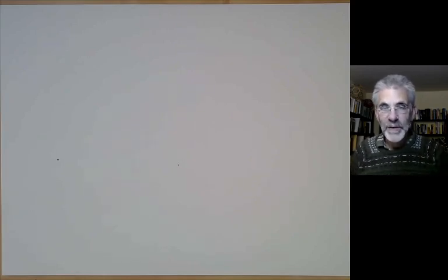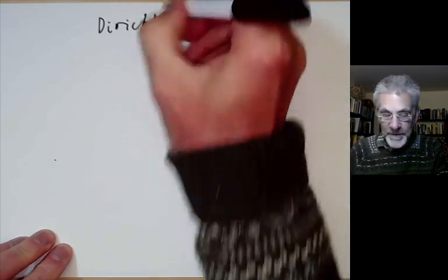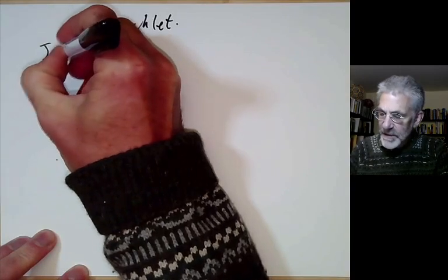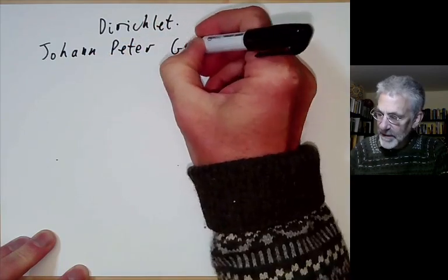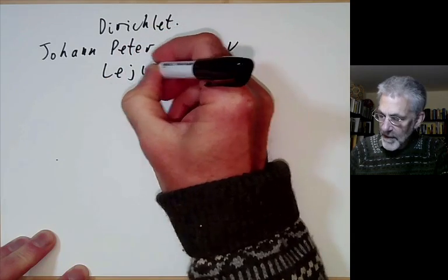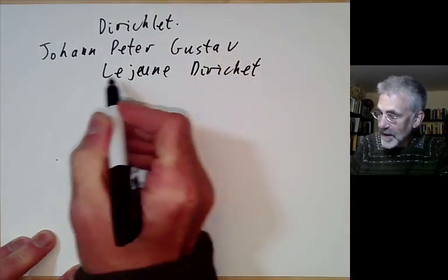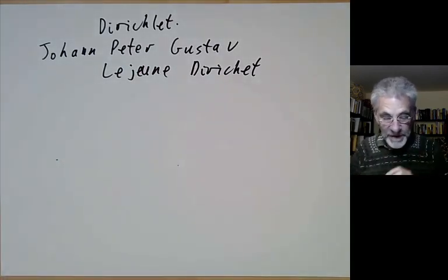This lecture is part of Math 115 at Berkeley, an introductory undergraduate course on number theory, and will be mostly about Dirichlet series. These are named after Dirichlet, who actually has one of the most impressive names of any mathematician — his full name is a lengthy double-barrelled thing, so 'Dirichlet' is really an abbreviation of his name.